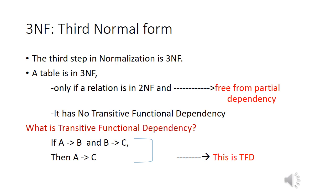What is transitive functional dependency? If A determines B and B determines C, then A determines C. This concept is called transitive functional dependency — we have already seen this in Armstrong's Axioms. So, for a table to be in 3NF: first, it must be in 2NF, and second, no transitive functional dependency must exist in that table.